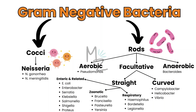Facultative straight rods include enteric and related bacteria like E. coli, Enterobacter, Serratia, Klebsiella, Salmonella, Shigella, and Proteus. And into zoonotic, which are Brucella, Francisella, Pasteurella, and Yersinia. And respiratory, which are Haemophilus, Bordetella, and Legionella.